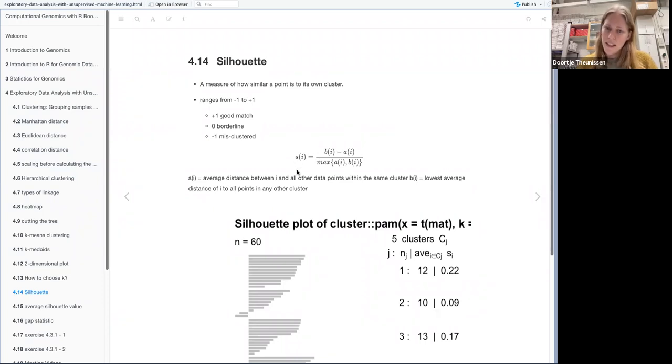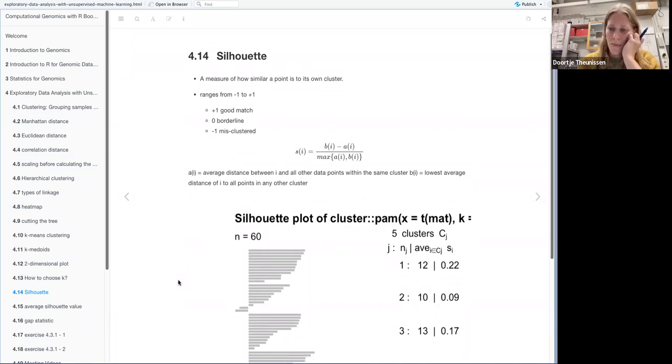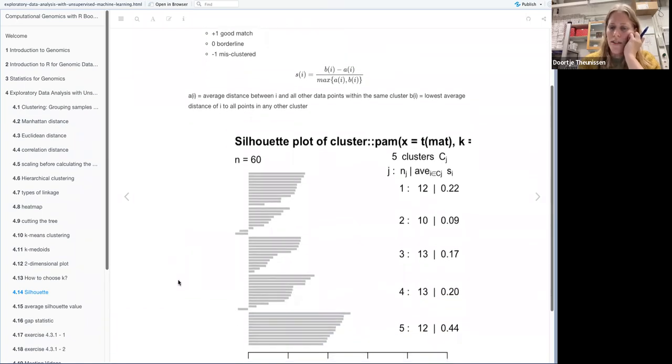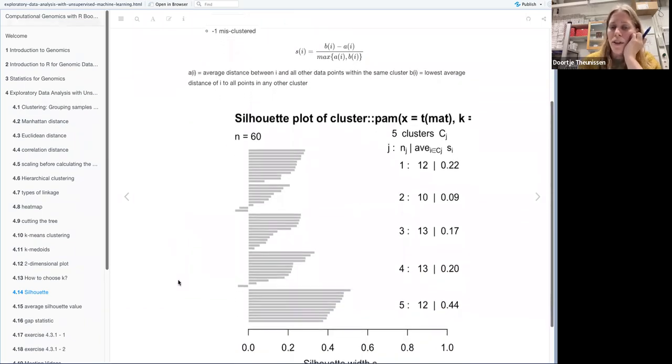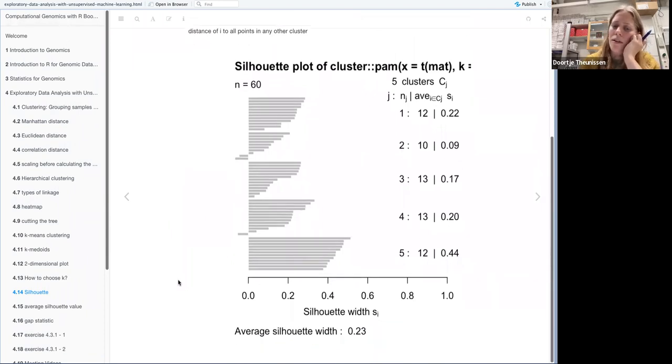So it uses a formula here where S is the silhouette value and then A stands for the average distance between I and the other points in the same cluster and then B stands for the lowest average distance of I to points in different clusters. And then you divide it by the maximum of the two to get something that is absolute 1 or less. And they give an example of how the silhouette values would look if you plot them again with the data that we just had.